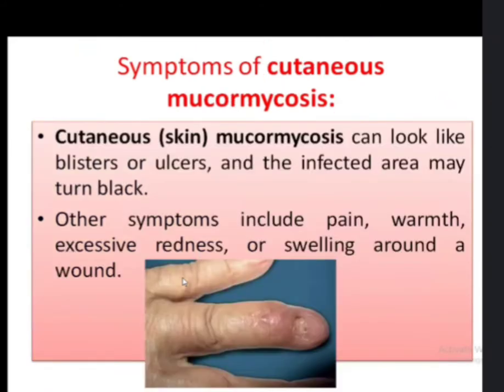The symptoms of cutaneous mucormycosis include blisters or ulcers in the infected area, which can turn black. Other symptoms include pain and excessive redness or swelling around the wound, as visible in the accompanying picture.